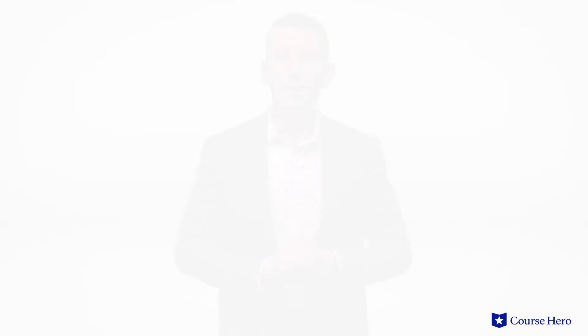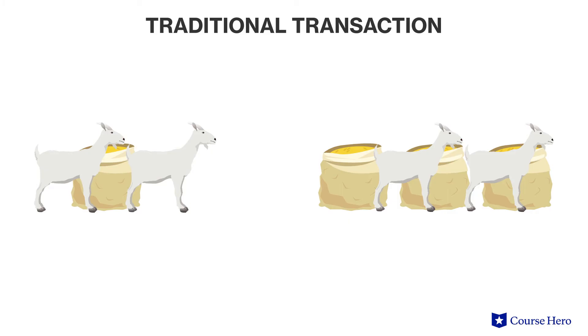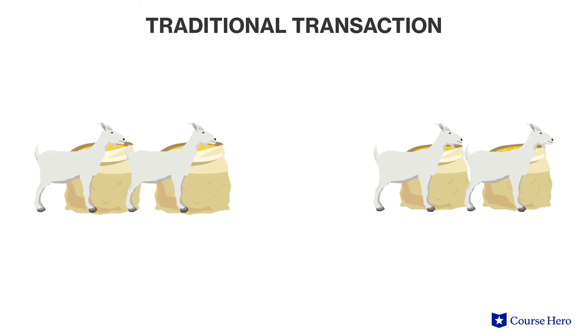In a traditional transaction, two things are exchanged. For example, a person gives another person a goat, which is a decrease to the first person's number of goats and an increase to the second person's number of goats. The second person gives the first person a sack of grain, which is a decrease to the second person's grain and an increase to the first person's grain. The first person cannot have negative sacks of grain, and the second person cannot have negative goats.